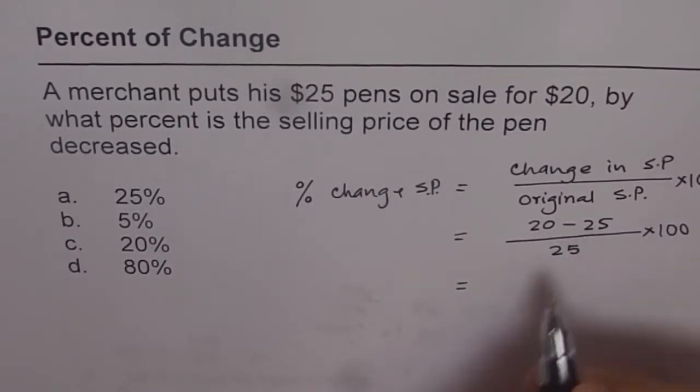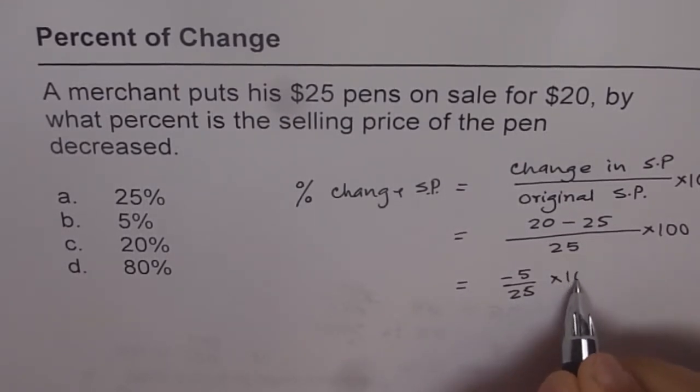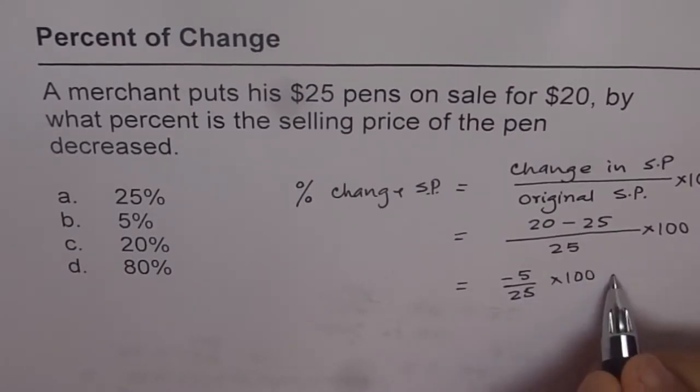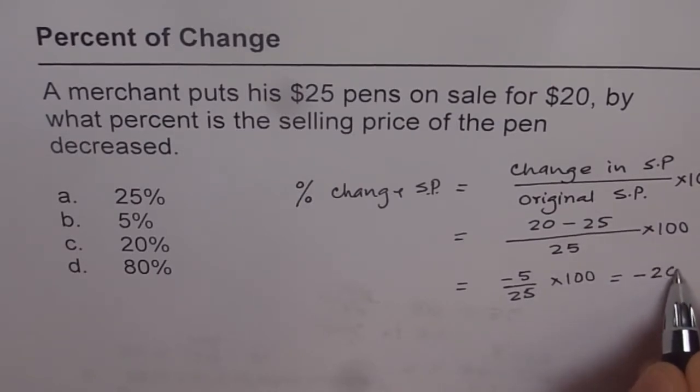So 20 minus 25 is minus 5. So minus 5 over 25 times 100. That is your answer. You know it is a quarter, which is 4 times, and so you get 4 times 5 as minus 20.